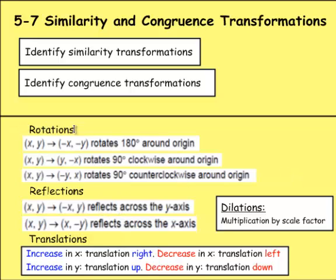Just know that rotations come in three types. You have rotation 180 degrees around the origin, rotation 90 degrees clockwise the way a clock goes, and rotation 90 degrees counterclockwise, which is the opposite way.